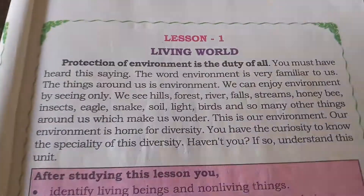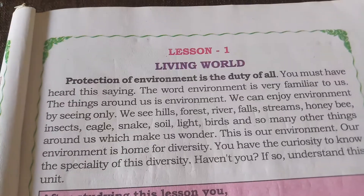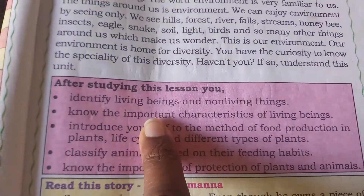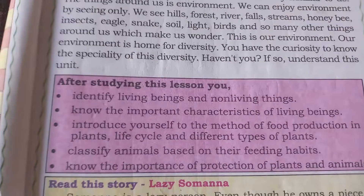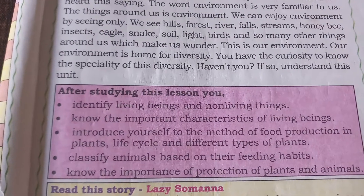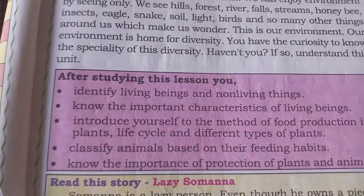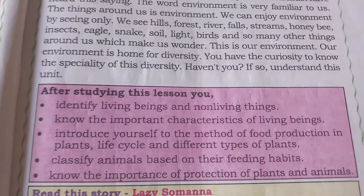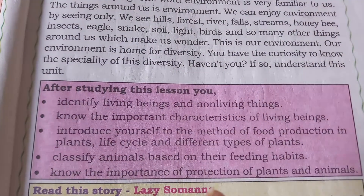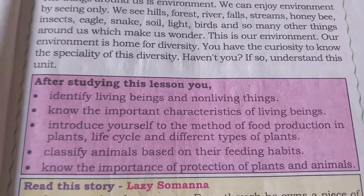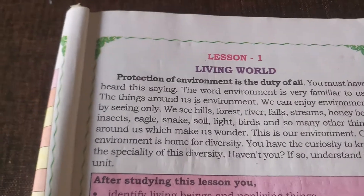Hello everyone, today I am taking the 5th class first chapter, that is Living World, from the EBS textbook. In this chapter you will learn what living beings and non-living things are, the important characteristics of living beings, methods of food production, the life cycle in plants, classification of animals based on feeding habits, and the importance of protection of plants and animals.